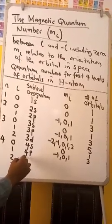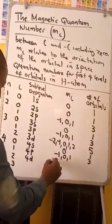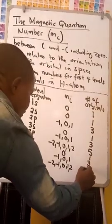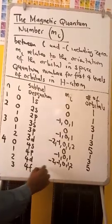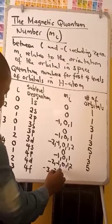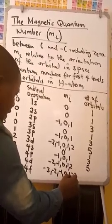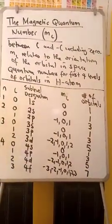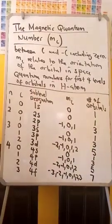When L is 2, this is 4D; ML values are negative 2, negative 1, 0, 1, and 2; number of orbitals: 5. When L is 3, this is 4F; ML values are negative 3, negative 2, negative 1, 0, 1, 2, and 3; number of orbitals: 7. So the F subshell has 7 orbitals.